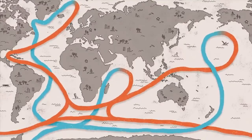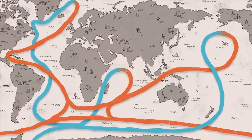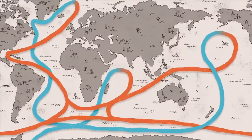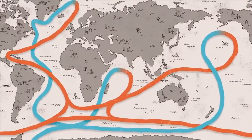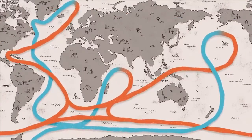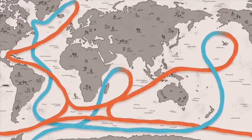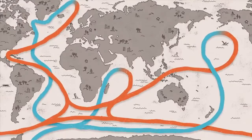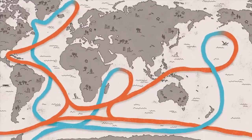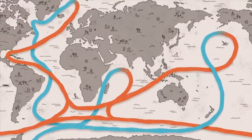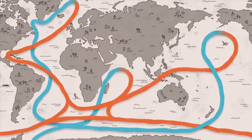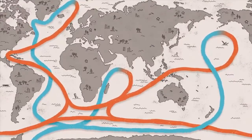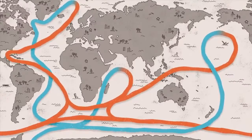The ocean currents can change their movement because of the Coriolis effect and the global conveyor. They can also change their movement because of differences in density.